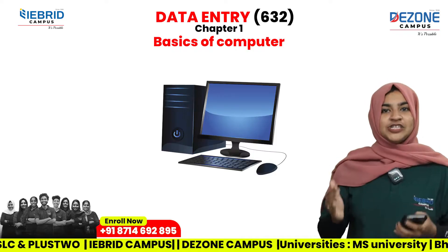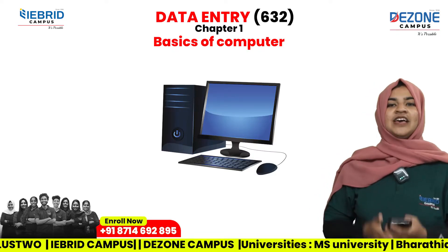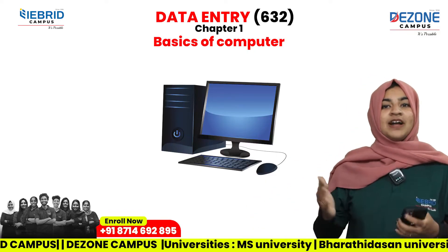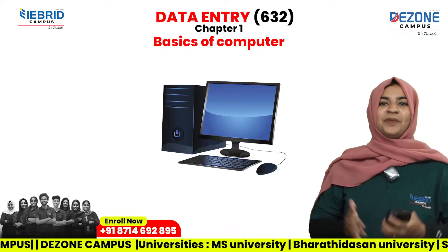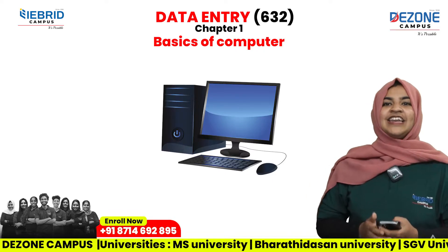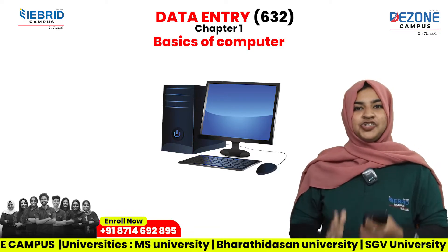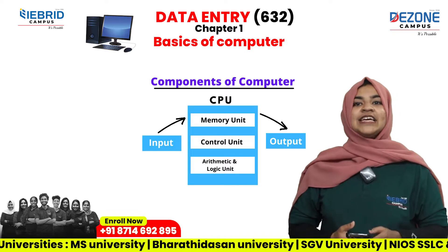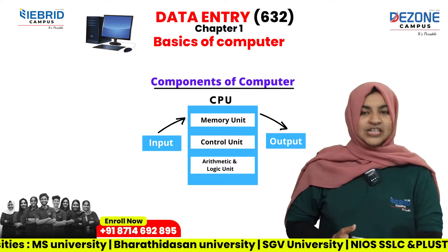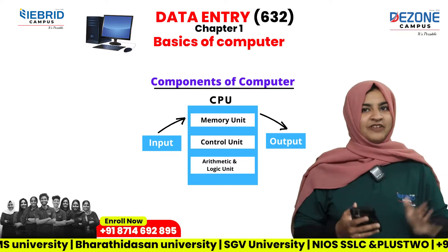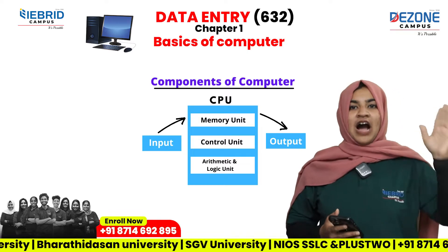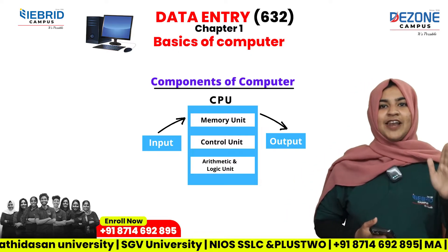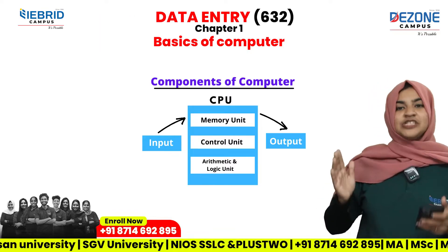What is a computer? The computer is an electronic device used by human beings. The important things in this chapter are the components of the computer. These components are the input unit, output unit, memory unit, control unit, and arithmetic and logic unit. We call these the components of the computer.